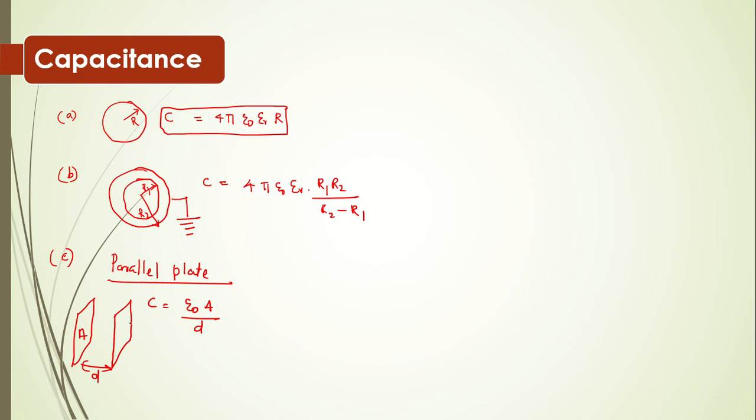For a parallel plate capacitor, the capacitance relation is ε₀A divided by D, where ε₀ is the permittivity constant, A is the area, and D is the separation distance.